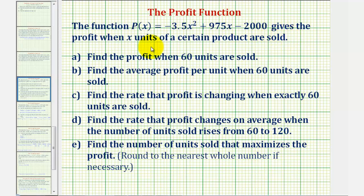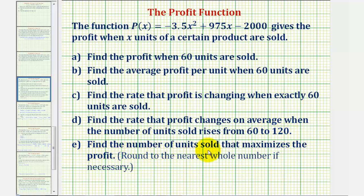The function p of x gives the profit when x units of a certain product are sold. Part A: find the profit when 60 units are sold. Part B: find the average profit per unit when 60 units are sold. Part C: find the rate the profit is changing when exactly 60 units are sold. Part D: find the rate the profit changes on average when the number of units sold rises from 60 to 120. And finally, Part E: find the number of units sold that maximizes the profit.